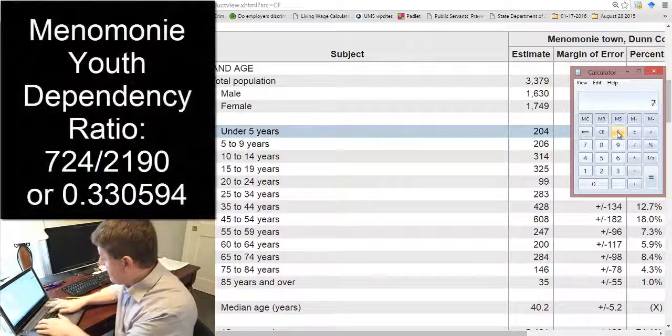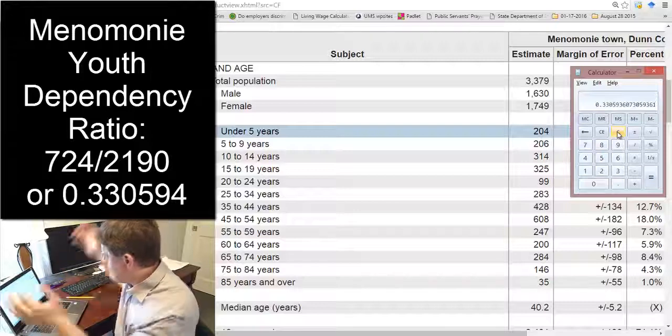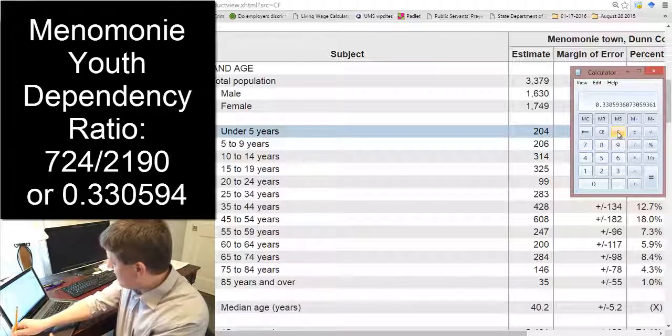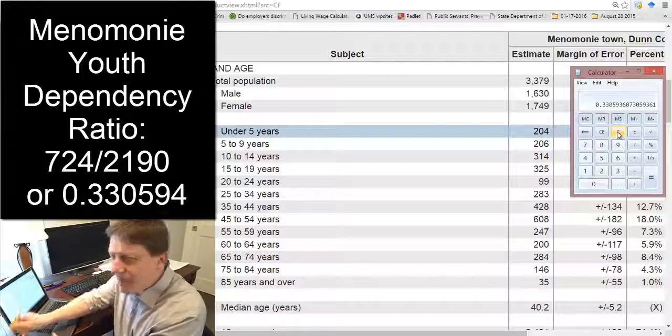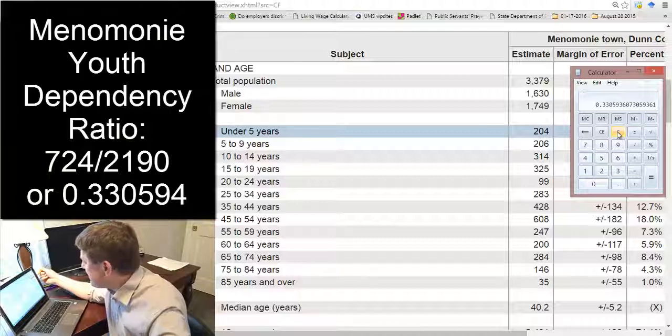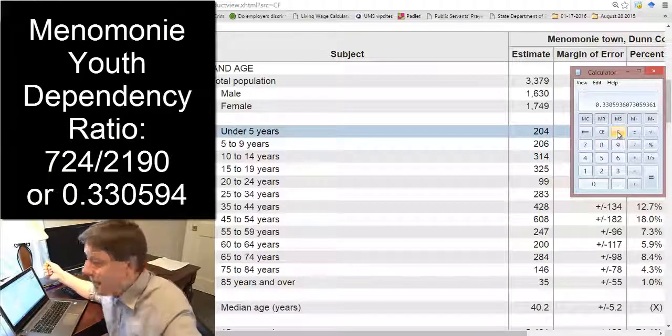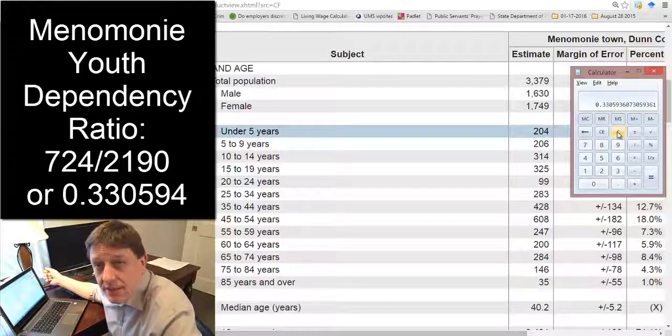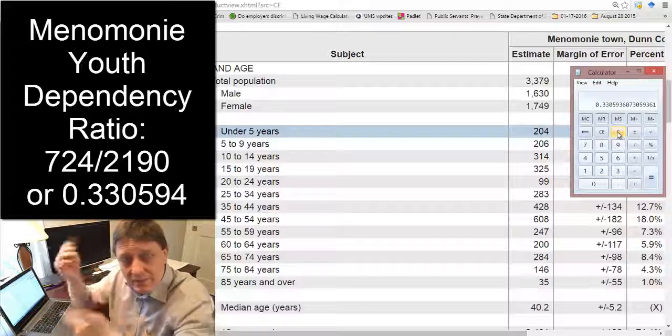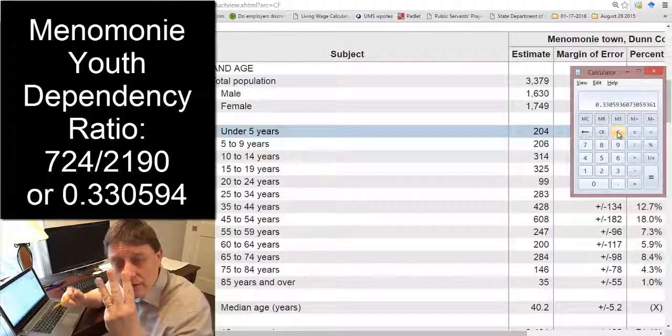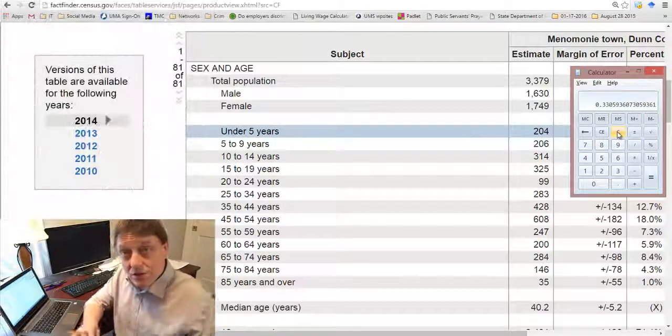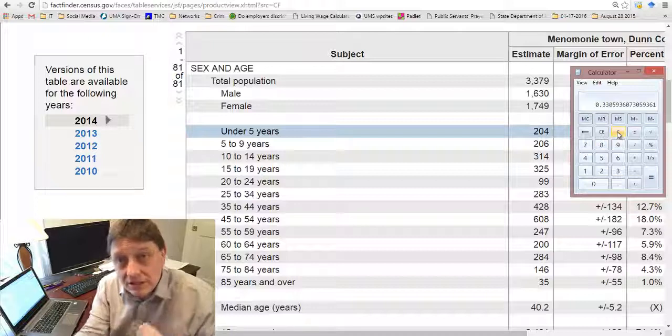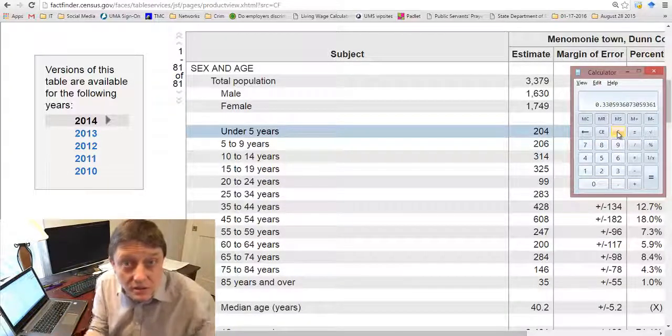So now we can calculate the youth dependency ratio, which is simply going to be 724 divided by 2,190. What could be simpler? Now that is going to give us a number, and that is 0.330594, if I round up. What does that tell us? Okay, it tells us that there's a third of a person almost exactly in Menominee who is a youth for every one person who is of working age. So you could flip that around in your mind, right? And you could, if you do a little math, you could say, oh, so there are three people working just about for every youth. That's good to know. That's a meaningful description of what's going on in the town, right? How many babies there are to feed or young children versus how many people there are to do the work to feed them.